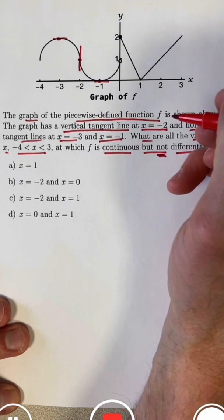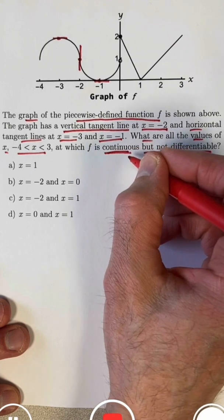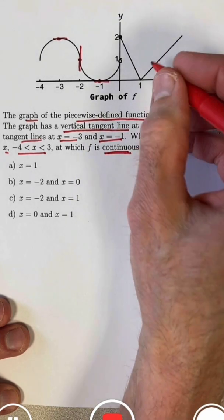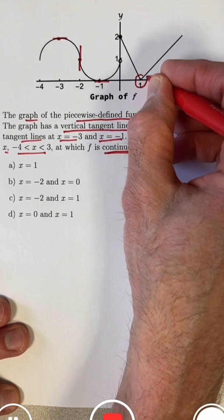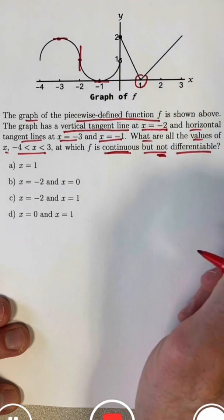Where does it not have a tangent line? That includes x equals 0, where there's a lack of continuity. However, we were looking for places where the function is continuous. The only other spot where we have continuity but not differentiability is where we have a corner in the graph. At x equals 1, there is a corner. There is no tangent line there at x equals 1.